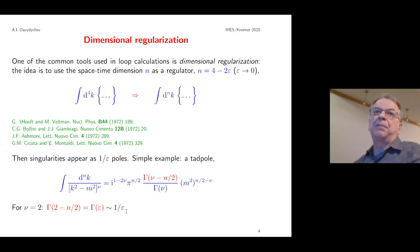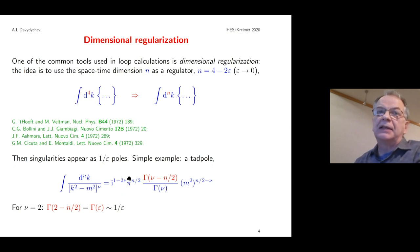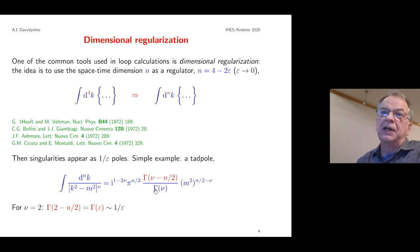One of the most common tools used in loop calculations is dimensional regularization. The idea is to use the spacetime dimension — I denote it as lowercase n — as a regulator. We introduce a small epsilon so the dimension is close to four. We change the four-dimensional integration into n-dimensional integration, and if the integrals are singular, the singularities appear as 1/ε poles. A simple example is the tadpole diagram, where ν denotes the power of the propagator.